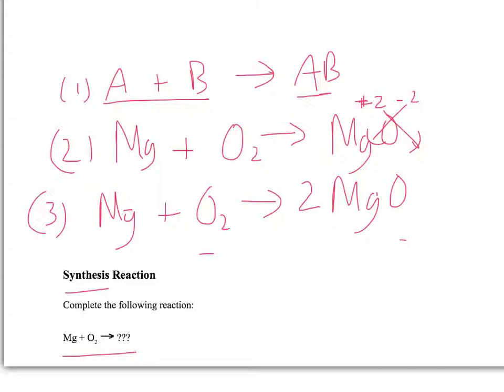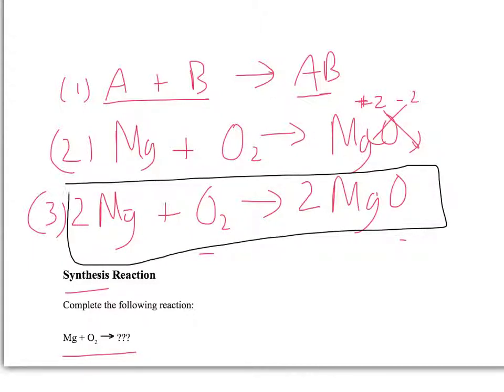Since we now have 2 Mg on the right from 2 MgO, we need 2 Mg on the left. That gives us our balanced equation for our synthesis reaction.